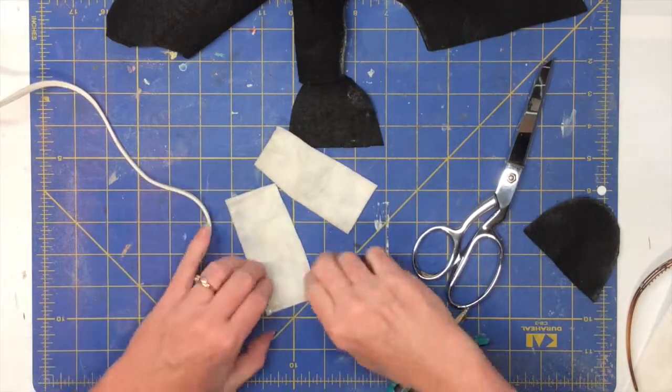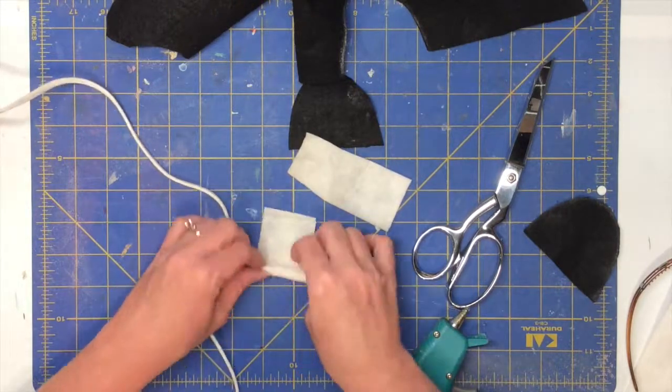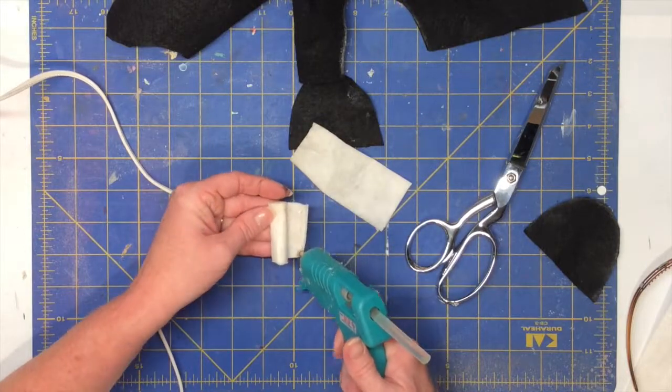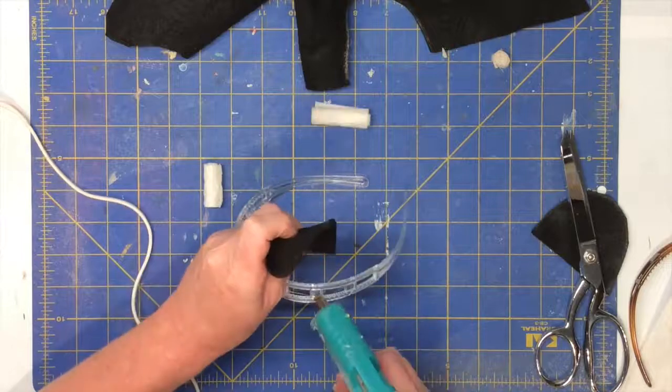Now I have the stiff white felt that I cut out some rectangles. Put a little hot glue there, and I'm rolling it up. And then once it's rolled up, I will add another bead of hot glue. And these are going to become little horns.